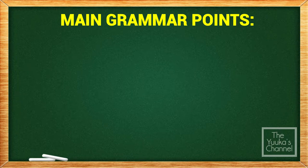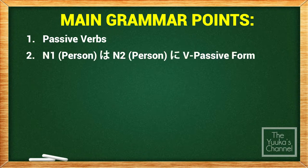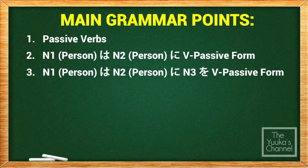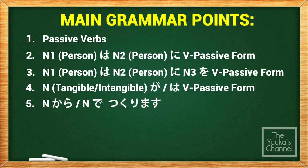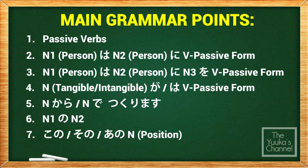Here are the grammar points we will discuss today. First, verb in passive form. Second, N1 wa, N2 ni, verb in passive form. Third, N1 wa, N2 ni, N3 o, verb in passive form. Fourth, noun ga or wa, verb in passive form. Fifth, noun kara or de, tsukurimasu. Next, N wa, N no. And lastly, kono, sono, ano, noun.